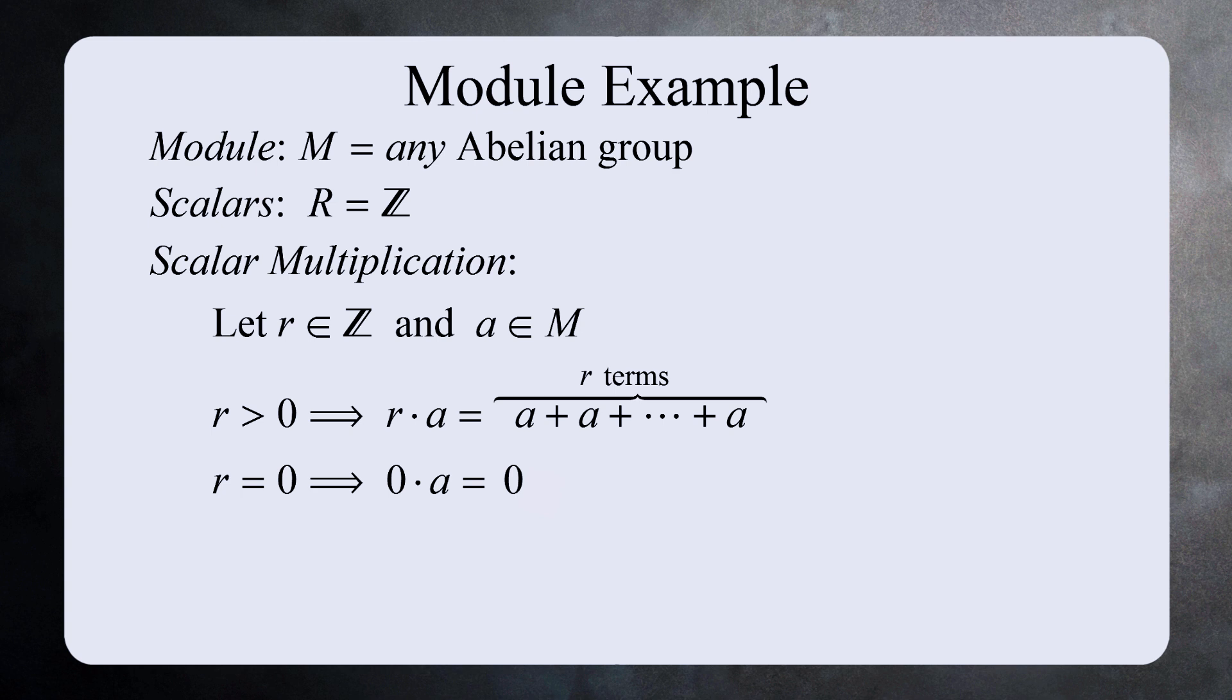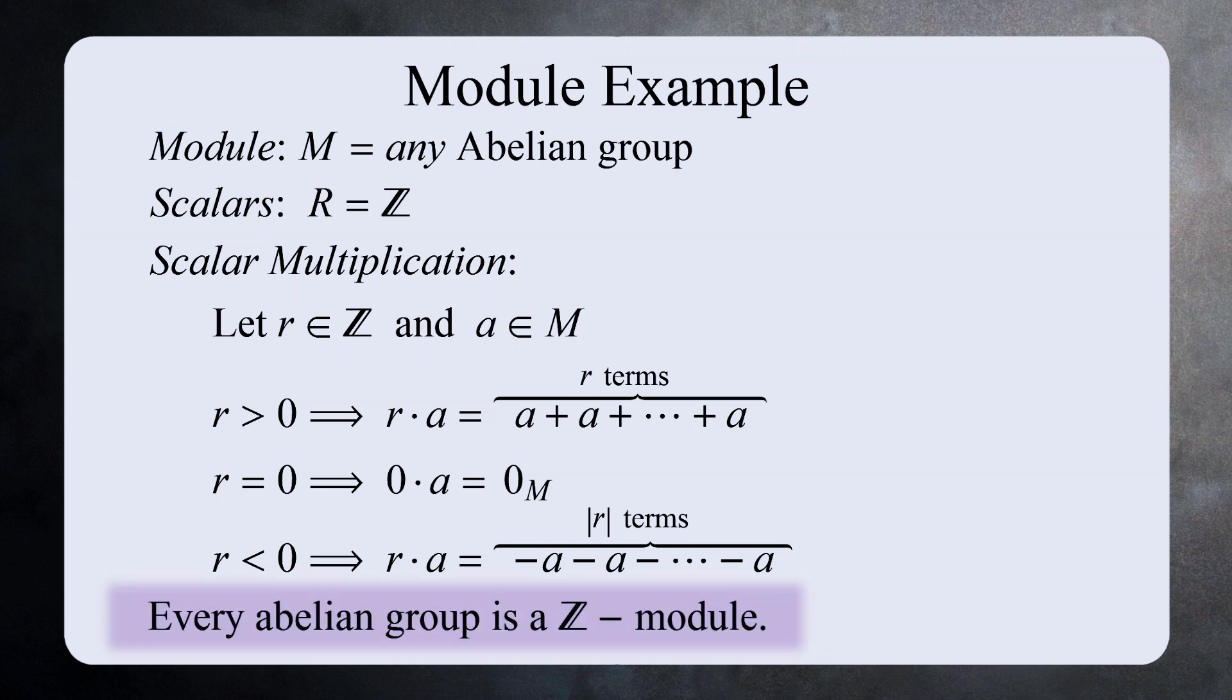If you want to avoid confusion, you can always write a little subscript M on this zero. And finally, if R is negative, we define R times A to be negative A minus A on and on, the absolute value of R times. The big takeaway here is that every abelian group is also a Z module.